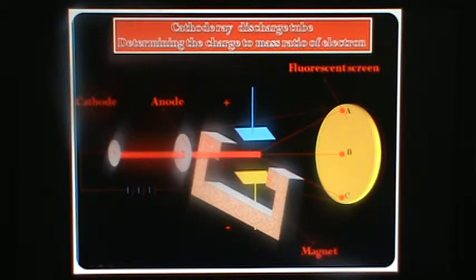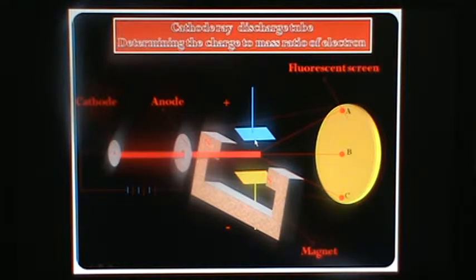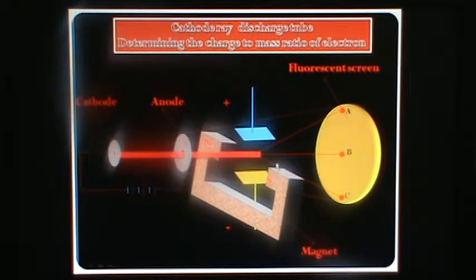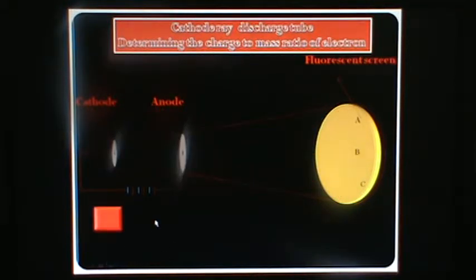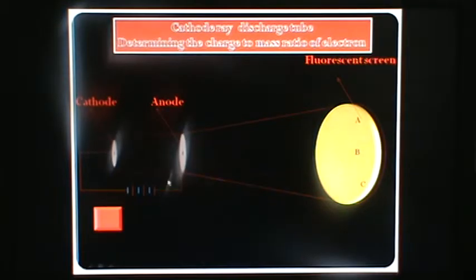And here this is a magnet. Now we are going to learn how this cathode discharge tube works.